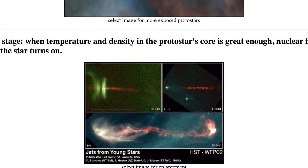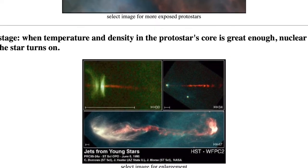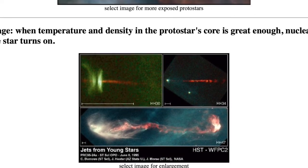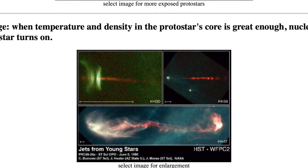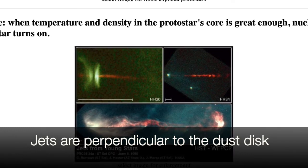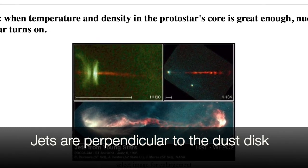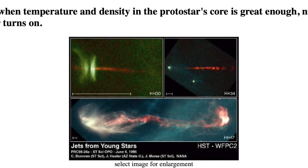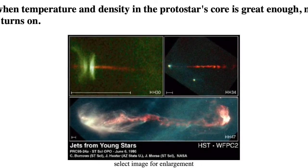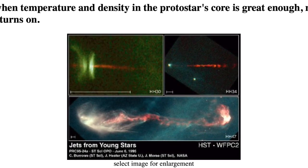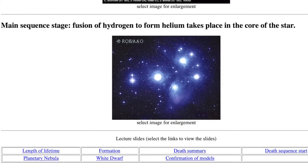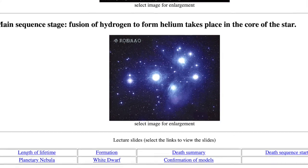The star turns on and produces strong winds that blow away much of the surrounding cocoon gas and dust. The dust gas disk channels the winds to flow preferentially along the rotation axis as jets squirting outward. With most of the cocoon gas blown away, the forming star itself becomes visible to the outside for the first time. The star settles down to being a calm main sequence star.